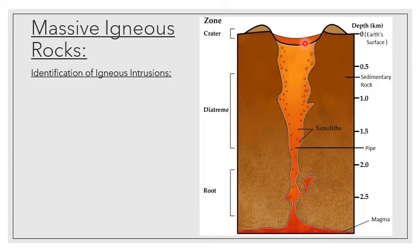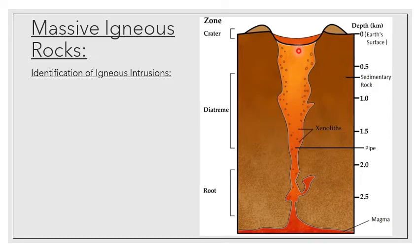A very common example of a volcanic pipe that we can still see today, but is no longer filled with magma because it's completely solidified, is the Big Hole in Kimberley. When these volcanic pipes mineralize and crystallize, they can host diamonds. The Big Hole in Kimberley is a perfect example of an ancient volcano that has completely solidified, crystallized, and hosted diamonds within the volcanic pipe. This was then mined successively downwards.